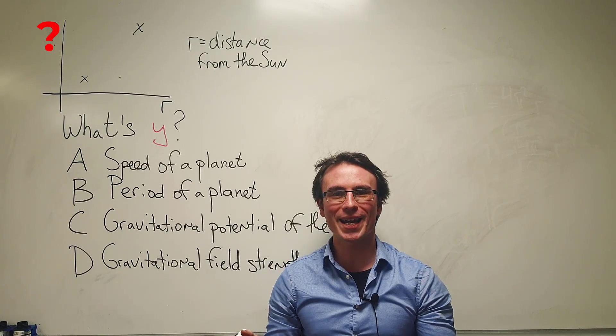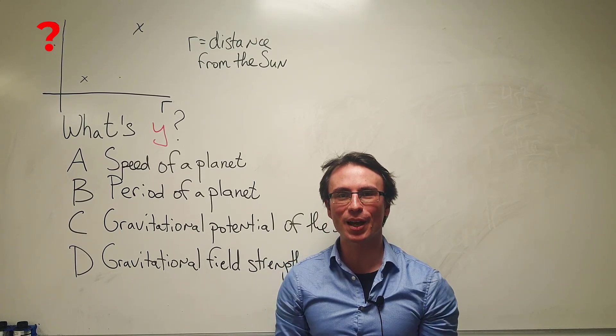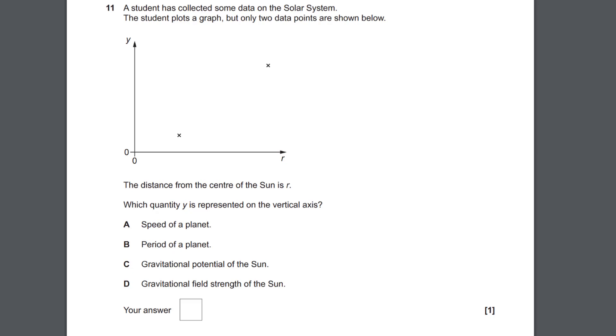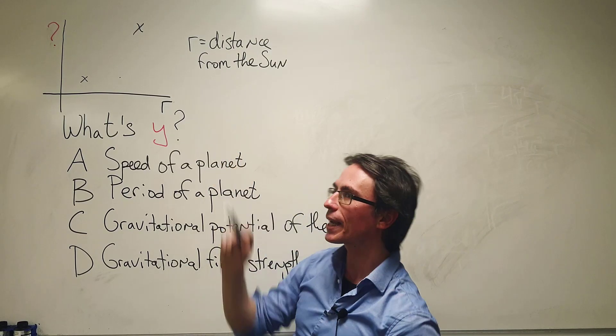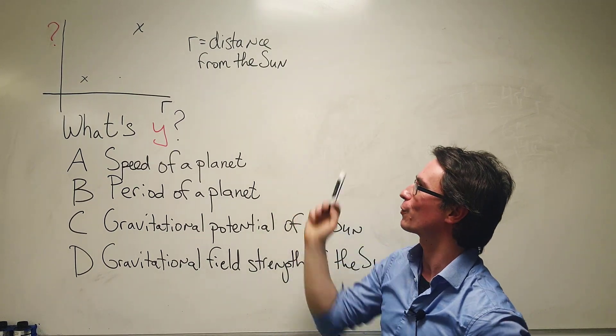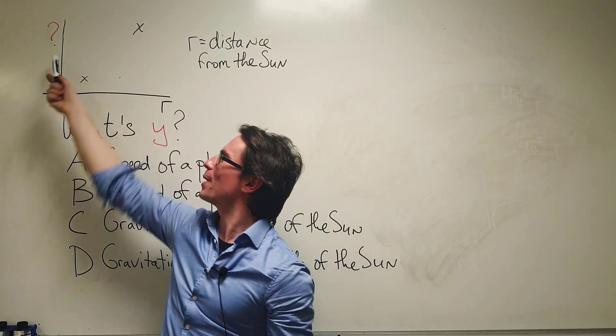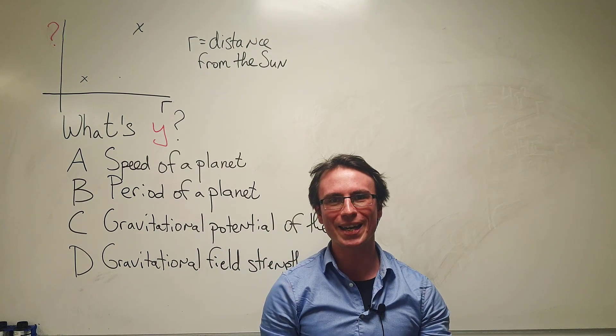So what physics quantity is on the y-axis? Let's answer this by looking at this question from the 2019 OCR A-level physics paper. We know that on the x-axis we have r, where r is the distance from the sun.